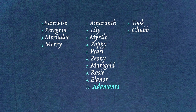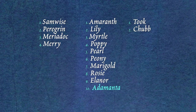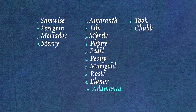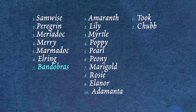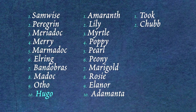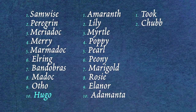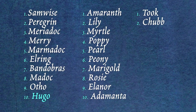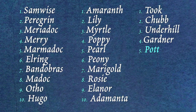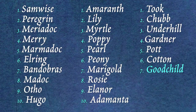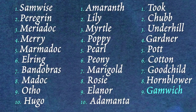To finish the irregular first name column for male hobbits, I added Marbodoc, Elring, Andobrass, Maddox, Otho, and Hugo. And finally I finished the irregular last name column by adding Underhill, Gardner, Pot, Cotton, Woodchild, Hornblower, and Gamwich.